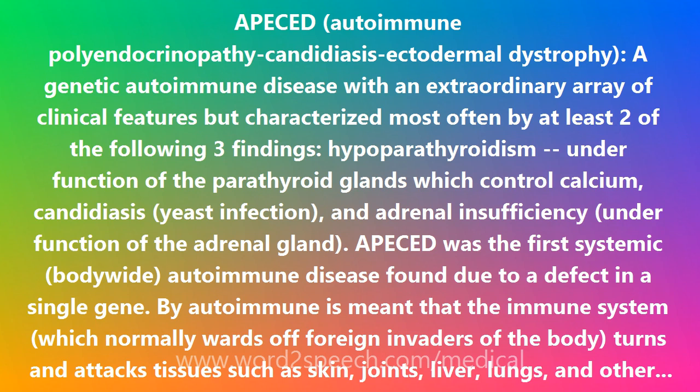Polyglandular problems include hypoparathyroidism, hypogonadism with sex gland failure, adrenal insufficiency, type 1 insulin-dependent diabetes with insufficient insulin production by the pancreas gland, and latent hypothyroidism — underfunction of the thyroid gland.